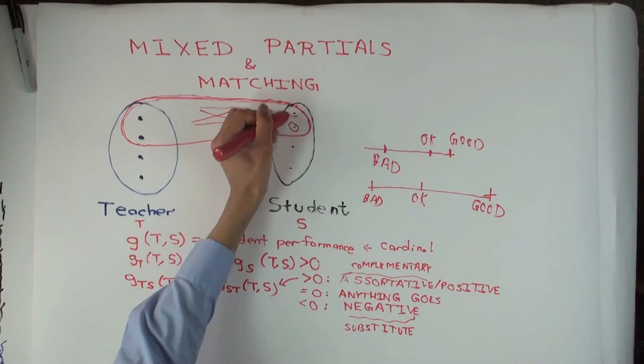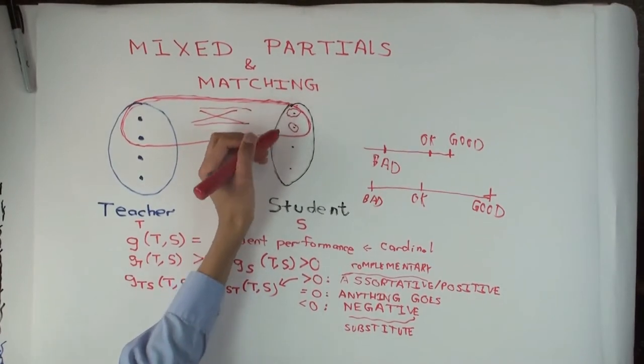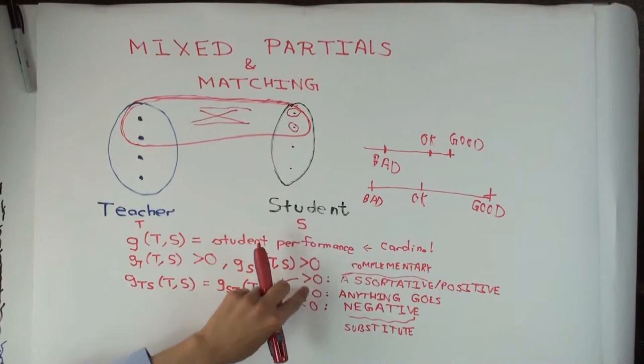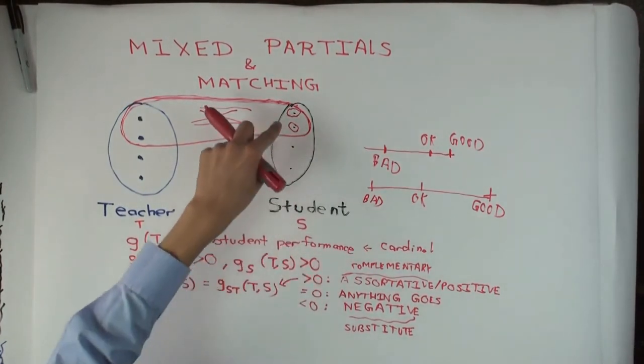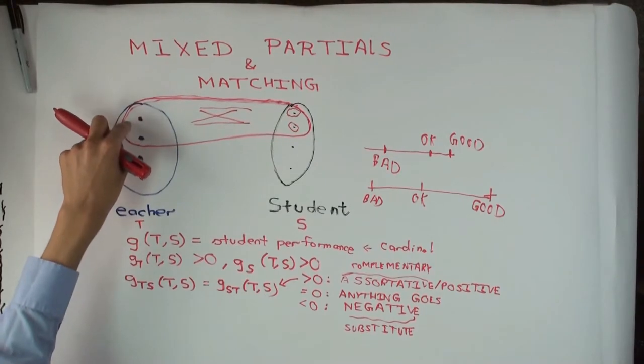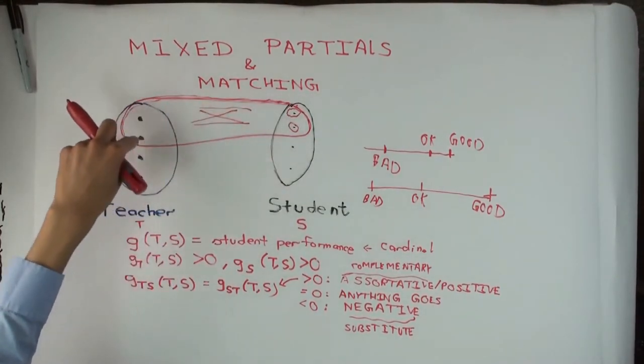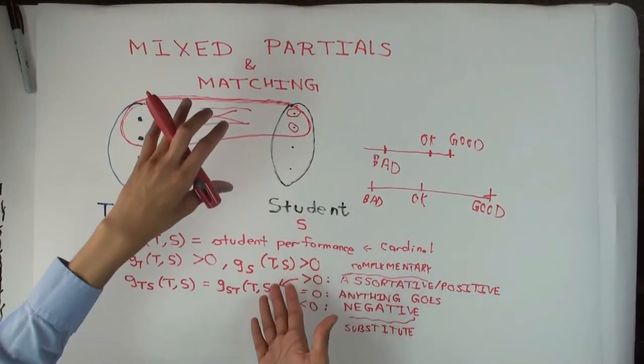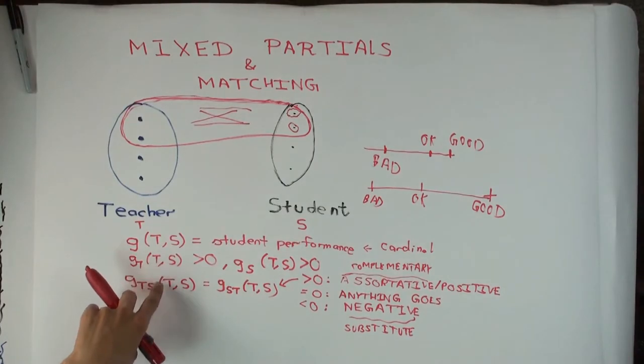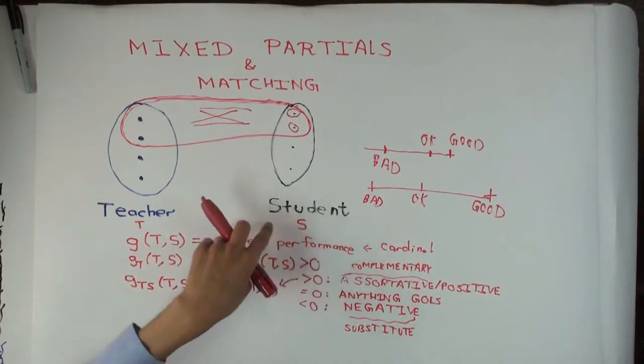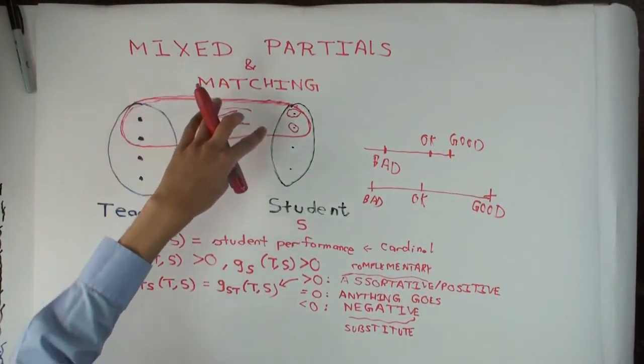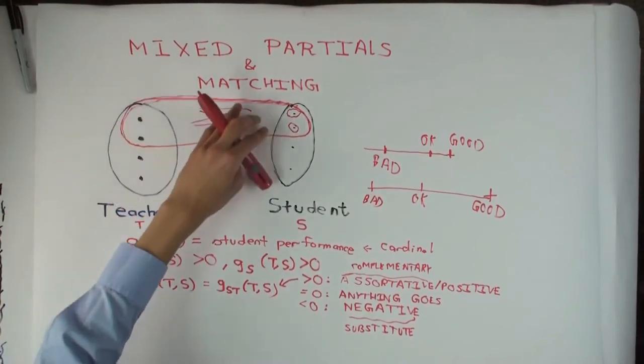Now let's say this other student comes in, the better student. Depending on whether you have this greater than zero or less than zero here, if it's greater than zero, then the better student is more desperate to get the better teacher. Because the better student knows that the same differential in teacher quality will lead to a greater increase in his score. And because his willingness to pay is proportional to his score, he is more desperate to get the better teacher. Now that we have these two students competing for these two teachers,